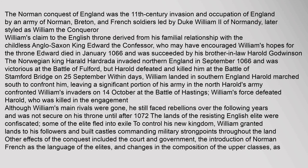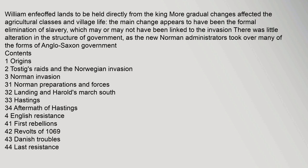Although William's main rivals were gone, he still faced rebellions over the following years and was not secure on his throne until after 1072. The lands of the resisting English elite were confiscated; some of the elite fled into exile. To control his new kingdom, William granted lands to his followers and built castles commanding military strongpoints throughout the land. Other effects of the conquest included changes to the court and government, the introduction of Norman French as the language of the elites, and changes in the composition of the upper classes.